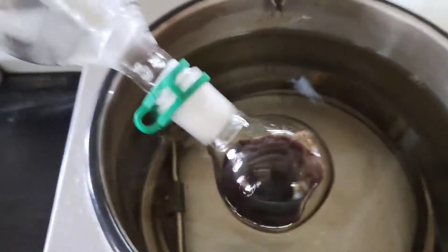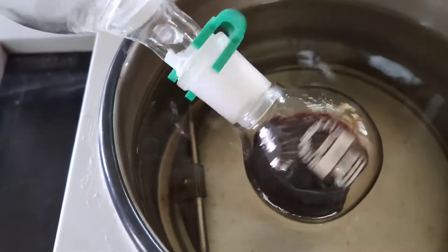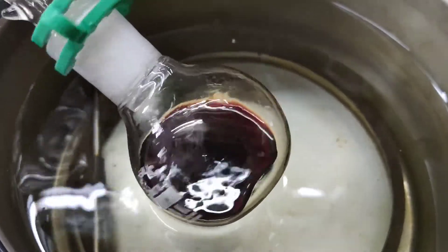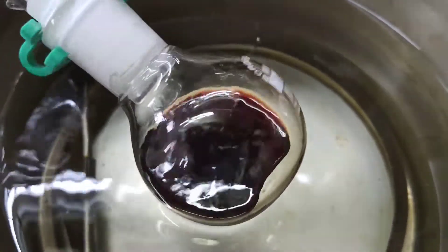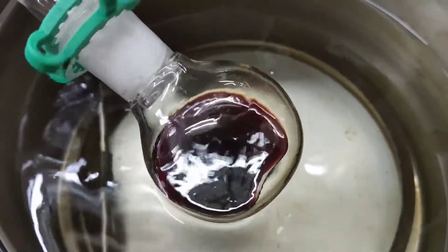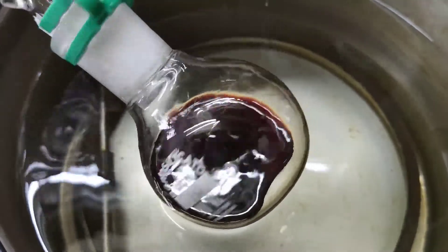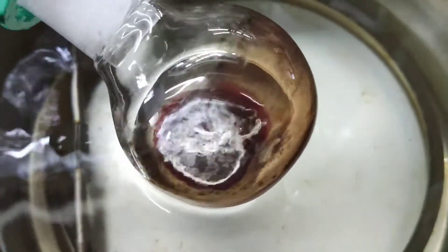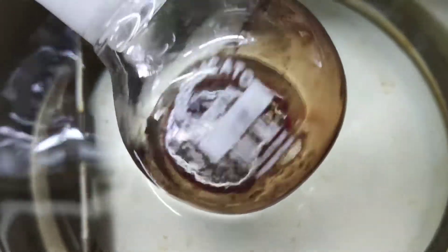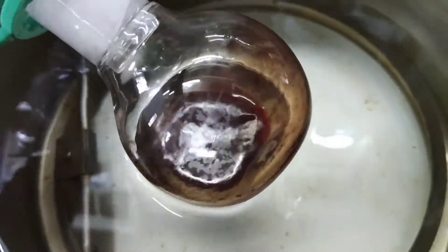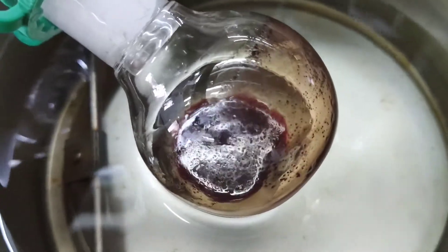We put the round bottom flask in the rotary evaporator and we evaporate it under reduced pressure around 600 millibar for around 15 minutes until the solution gets concentrated enough so that the crystalline material starts to crash out of the solution.